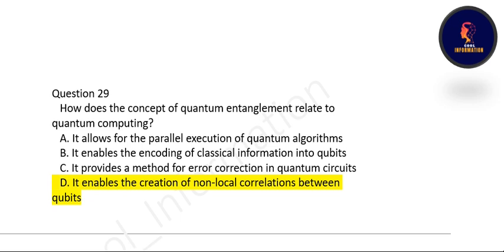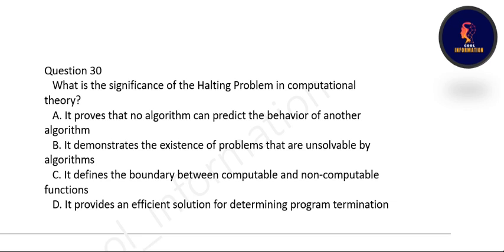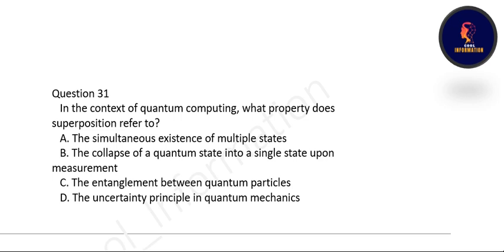Next question: what is the significance of the halting problem in computational theory? The correct option is B: it demonstrates the existence of problems that are unsolvable by any algorithm. Next question: in the context of quantum computing, what property does superposition refer to? Superposition means the simultaneous existence of multiple states. Option A is correct.